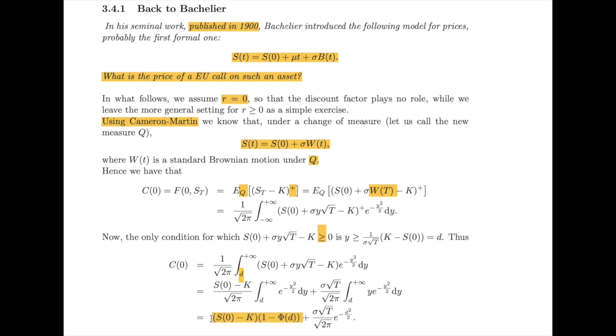The first part can then be rewritten in terms of the survival function of a standard normal random variable evaluated at d, and the second integral can be solved explicitly. Notice that the quantity 1 minus Phi of d is the survival function of a standard normal. You can also write that as Phi-bar of d, or if you want to express everything in terms of the CDF of a standard normal, you can use the symmetry of the standard normal and write 1 minus Phi of d as Phi of minus d. In that sense, the formula looks a little bit more similar to the formula we have already considered under the basic setting of a geometric Brownian motion.